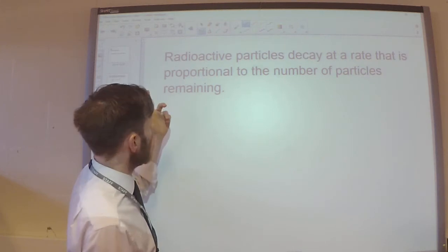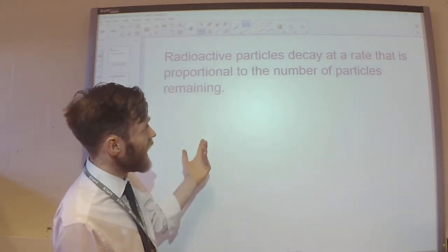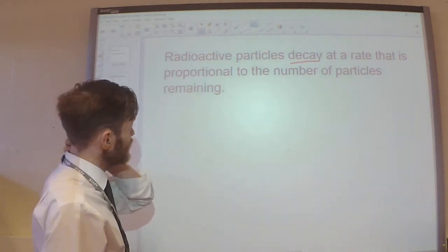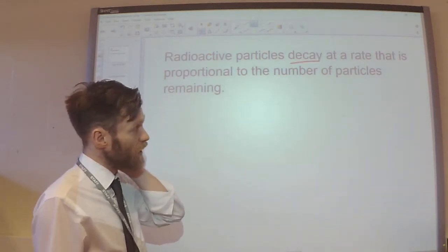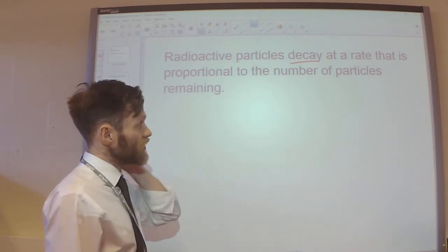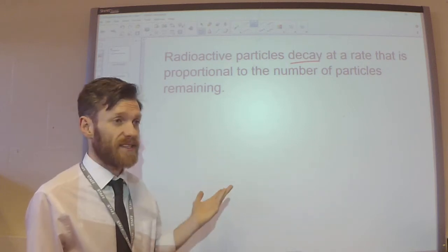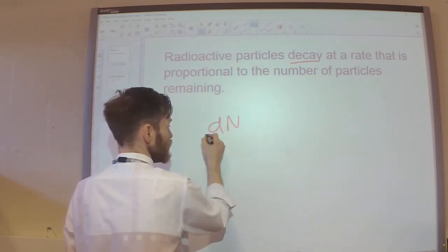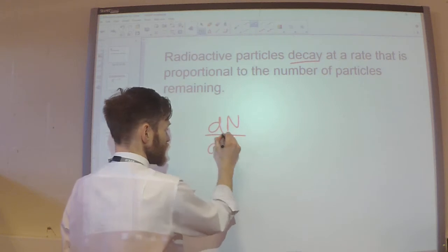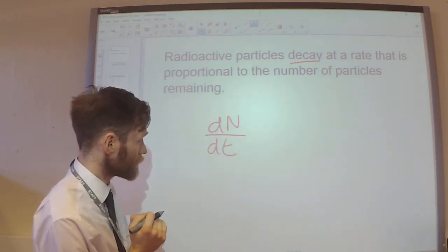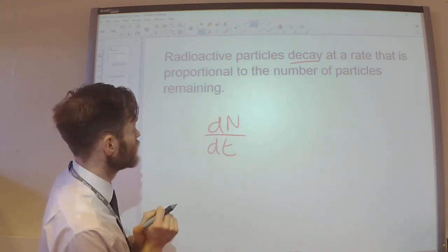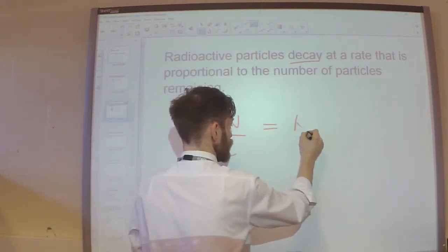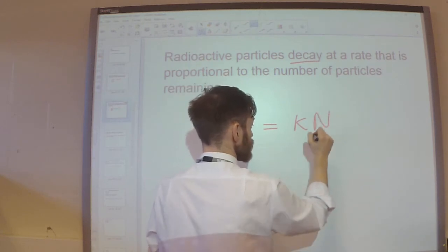Next, radioactive particles decay. It's a really key word. Decay at a rate that's proportional to the number of particles remaining. So, we're talking about the number of particles. Let's call that n. So, the rate of change of the particles, dn by dt, is proportional to the number of particles remaining. So, equals proportional to the number of particles remaining.